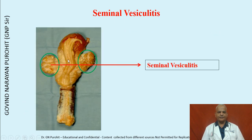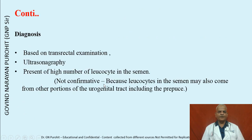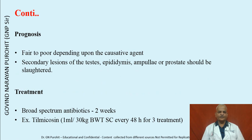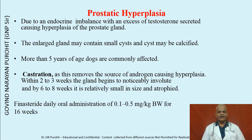The diagnosis of seminal vesiculitis is based on transrectal examination, ultrasonography, and presence of high numbers of leukocytes in the semen — though this is not confirmatory as leukocytes may also come from other portions of the urogenital tract. The prognosis is fair to poor depending on the causative agent. Secondary lesions of the testes, epididymis, ampulla, or prostate should be evaluated and the animal may be slaughtered. Broad-spectrum antibiotics may be given for two weeks, for example tilmicosin every 48 hours for three treatments.